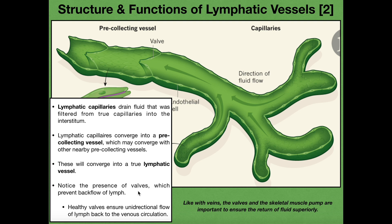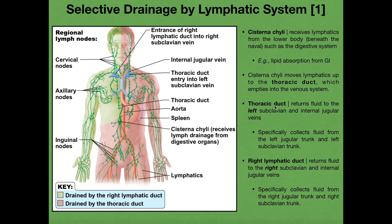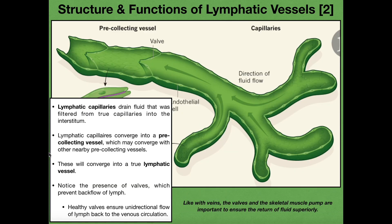Lymphatic vessels also have smooth muscle in their walls. This smooth muscle performs something very similar to peristalsis, which helps move this fluid back upward toward the heart. Remember that the lymphatic vessels are not returning fluid directly to the heart — they're returning it to the thoracic duct and the right lymphatic duct, draining into the subclavian and internal jugular veins. The valves prevent backflow, and the smooth muscle in the vessel walls helps move fluid unidirectionally toward those regions.